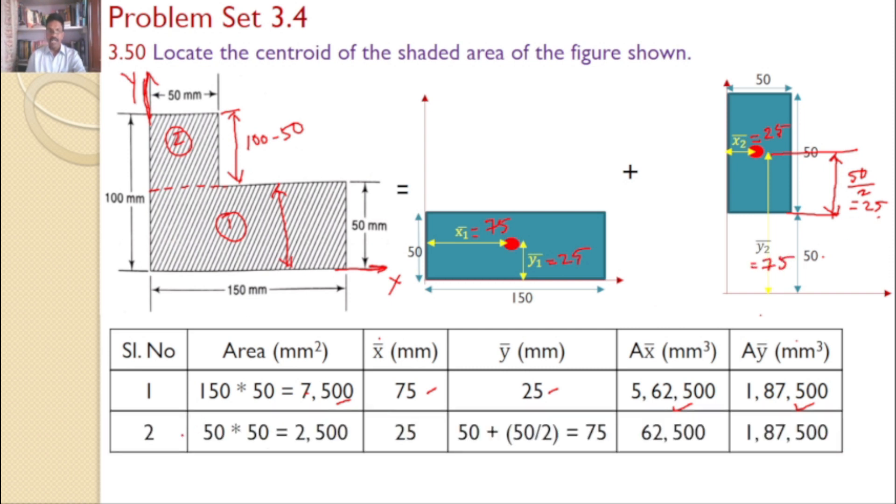Now with this information, serial number 2: area 50 by 50, that is 2,500. x2 bar clearly is 25, and y2 bar is 50 plus 50 by 2, that equals 75. And this value gives A2 x2 bar, and this value gives A2 y2 bar.